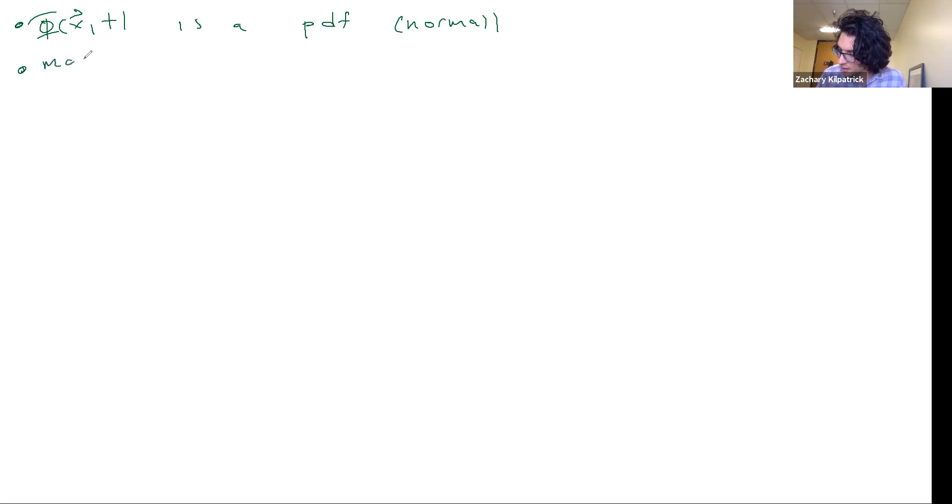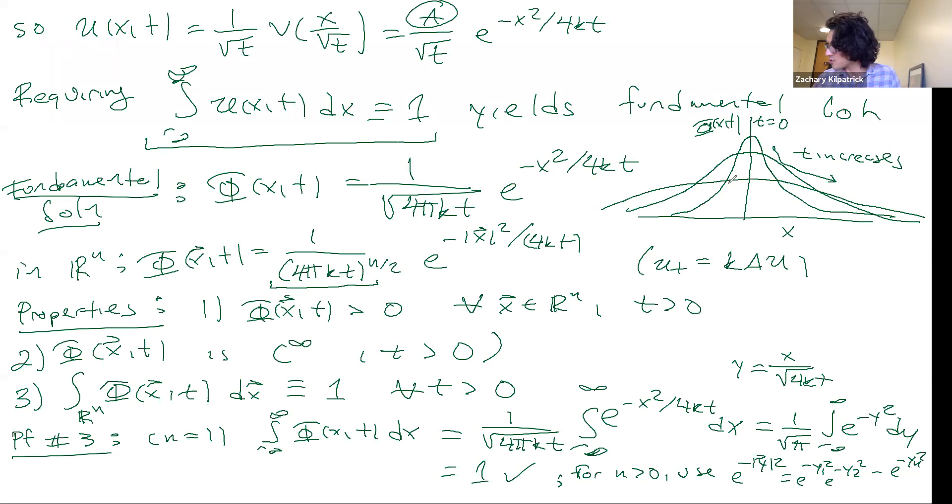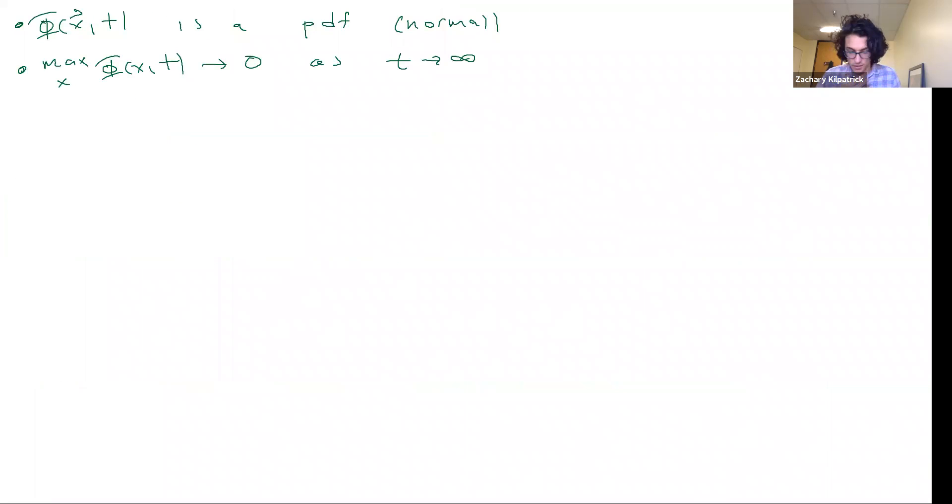The other thing is that this function phi, if I take its maximum over X, let's do it in 1D, this is going to go to zero as T goes to infinity. So remember this smoothing operation, it's going to smooth out over time. It's going to spread out across the domain over time.